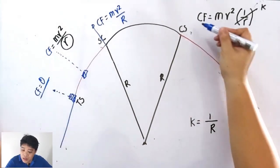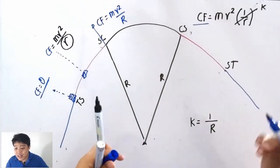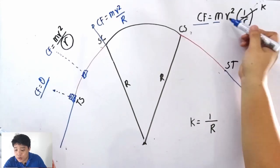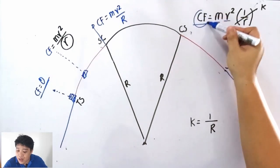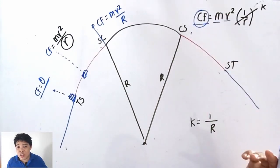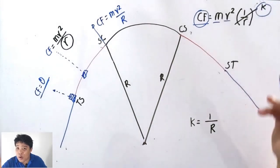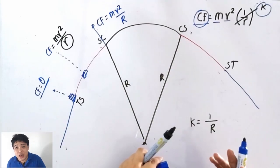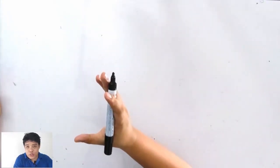As I said, the centrifugal force should increase linearly. Since the mass of the vehicle and the velocity are constant, to provide a linear change in centrifugal force, the curvature k — which is the reciprocal of the radius — should also change linearly. Let us graph the value of curvature to differentiate the simple curve from the transition curve.